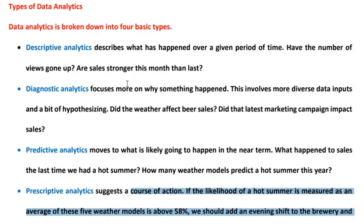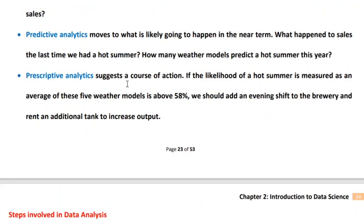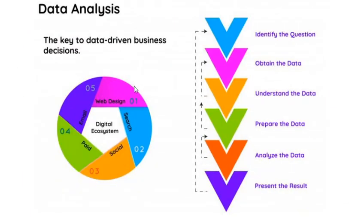So these are the four basic types of analytics: descriptive analytics, diagnostic analytics, predictive analytics, and prescriptive analytics. Now let us try to understand what are the steps involved in data analysis. Basically, there are six steps: first, identify the question; second, obtain the data; third, understand the data; fourth, prepare the data; fifth, analyze the data; and sixth, present the result.